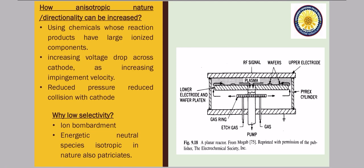I am not saying that wet etching also has poor selectivity — dry etching is still better in that regard. Additionally, energetic neutral species that we add are quite isotropic in nature. If they are isotropic, they also participate in the etch process, and this is another reason why our selectivity is poor. These are basically the two things that make selectivity poor.